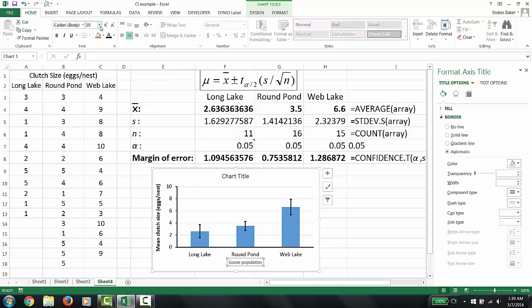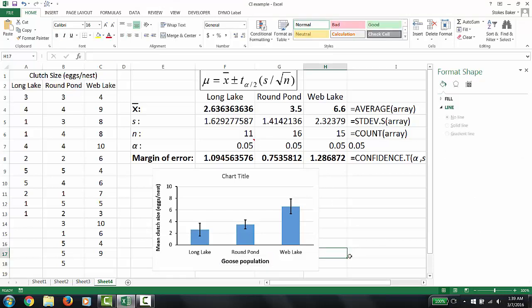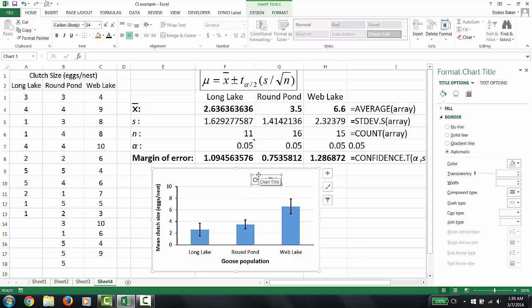For the labeling of our population, I'm going to use 14 point and black. Oh and for a chart title, we could say mean clutch size with 95% confidence intervals. There you are.